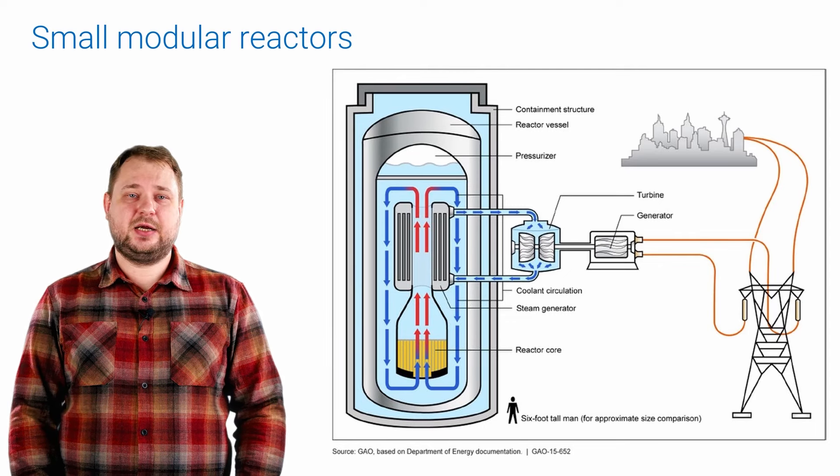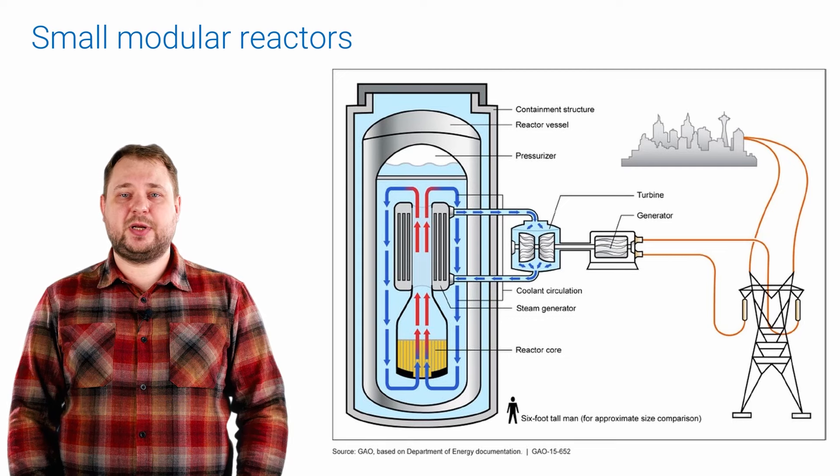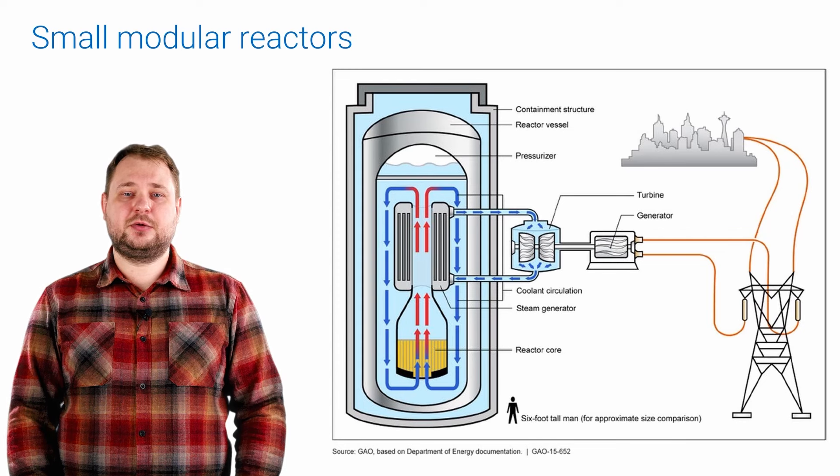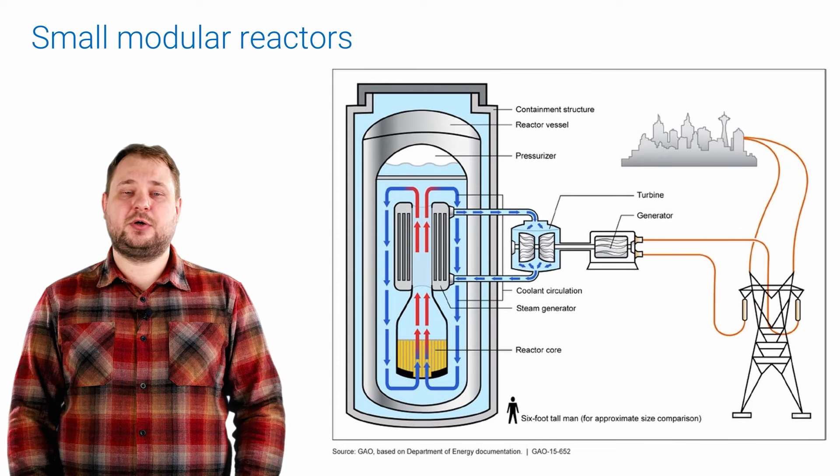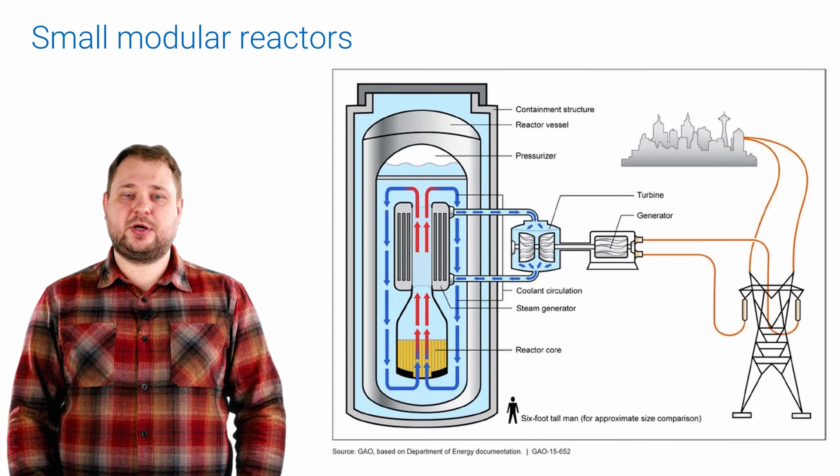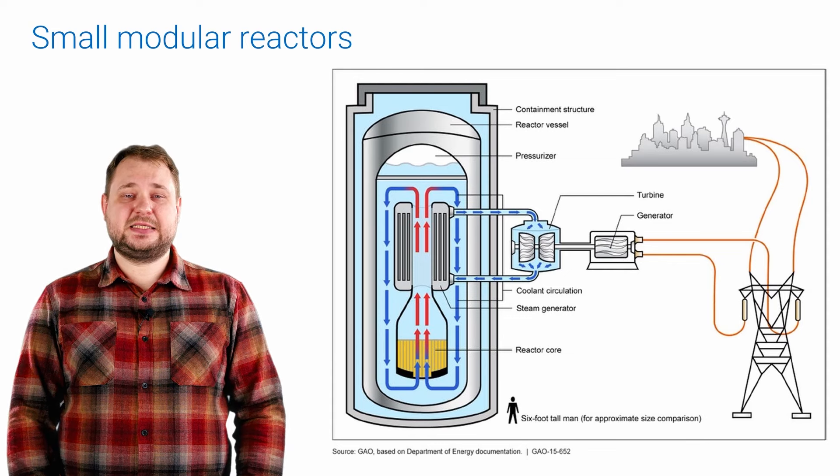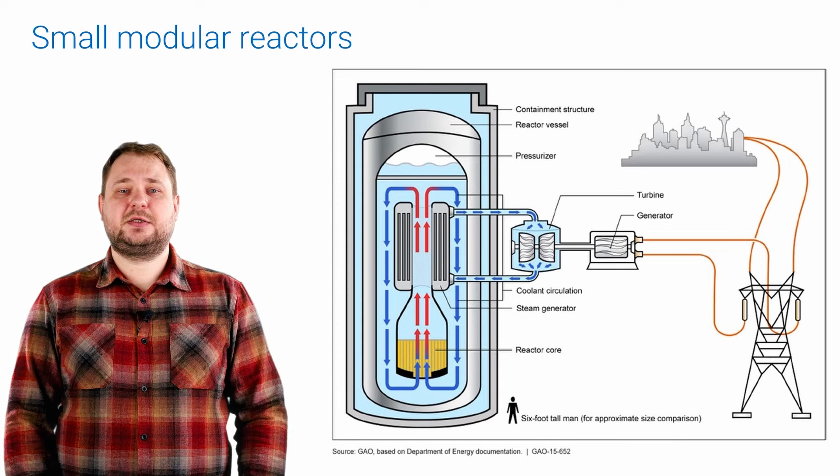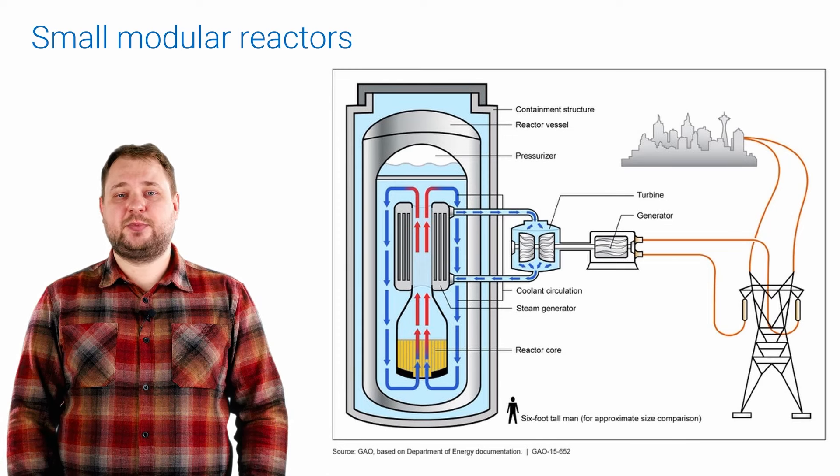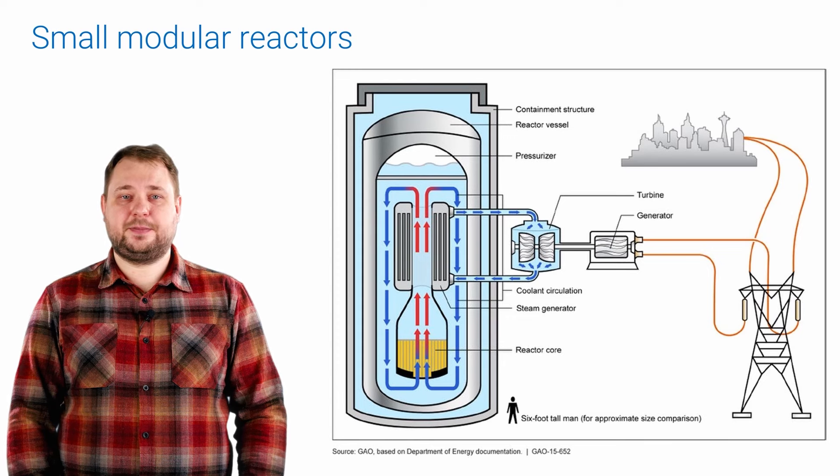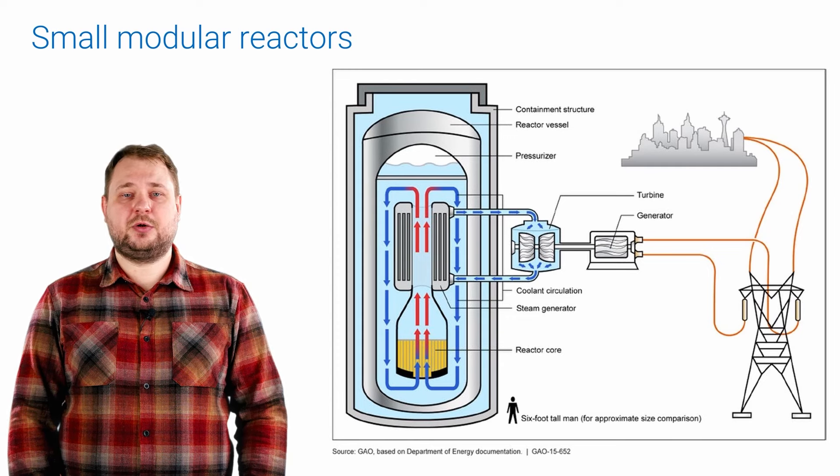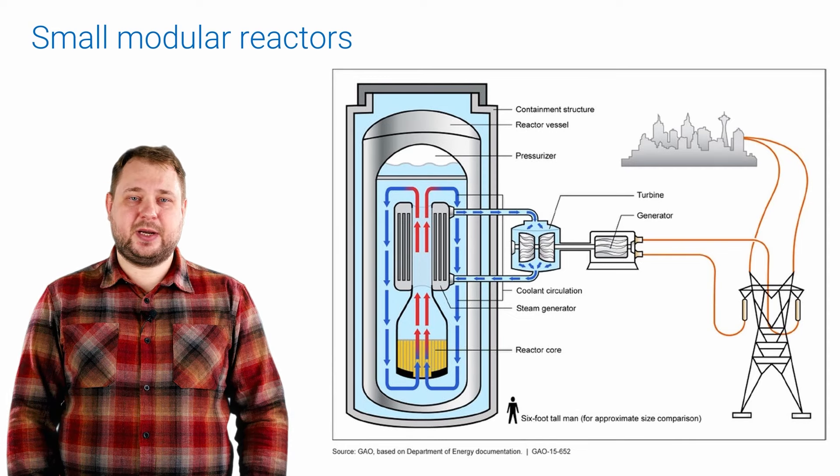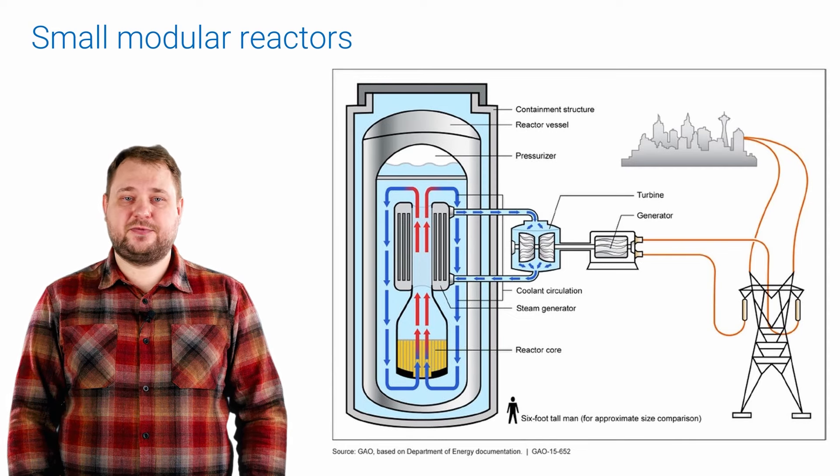Instead, as the name suggests, SMR reactors are built around a compact, simple design consisting of modules that include not only the reactor but also most of the ancillary components. This allows power plants to be assembled in factories or shipyards as modular units and then transported to site for assembly. The goal is not only to reduce cost, but also to radically reduce the construction time and certification of the plant for commissioning.